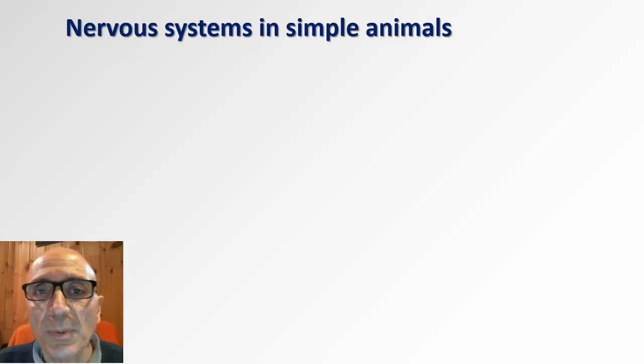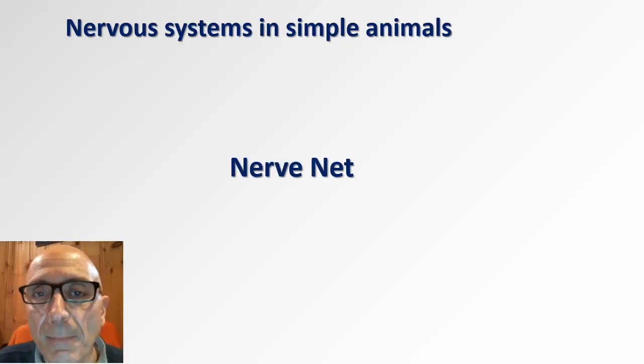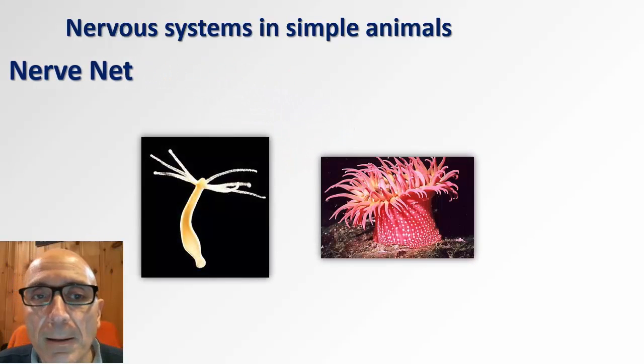Let's start with the organization of the nervous system in simple animals. These animals process information with a simple network of diffused neurons known as nerve net. We can find nerve nets in the early nervous systems to evolve in animals such as these cnidarians like the sea anemone and the hydra.